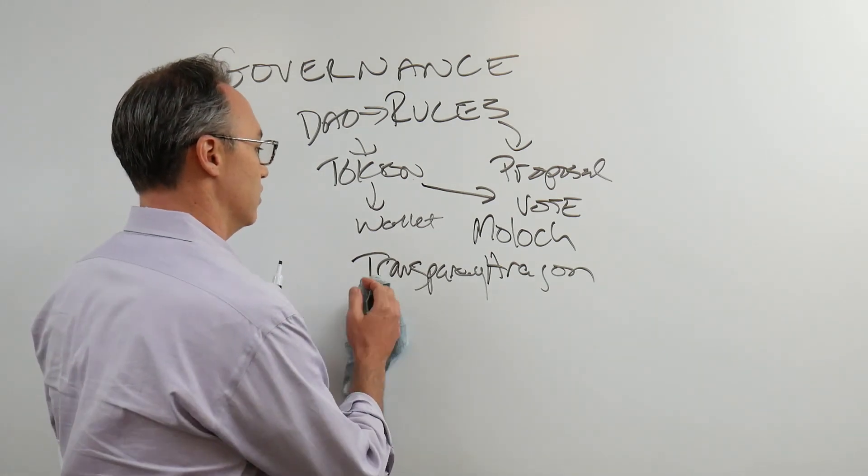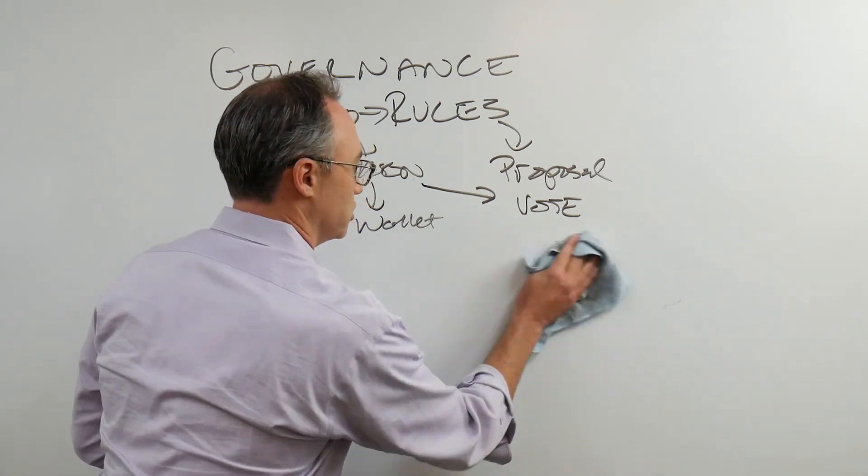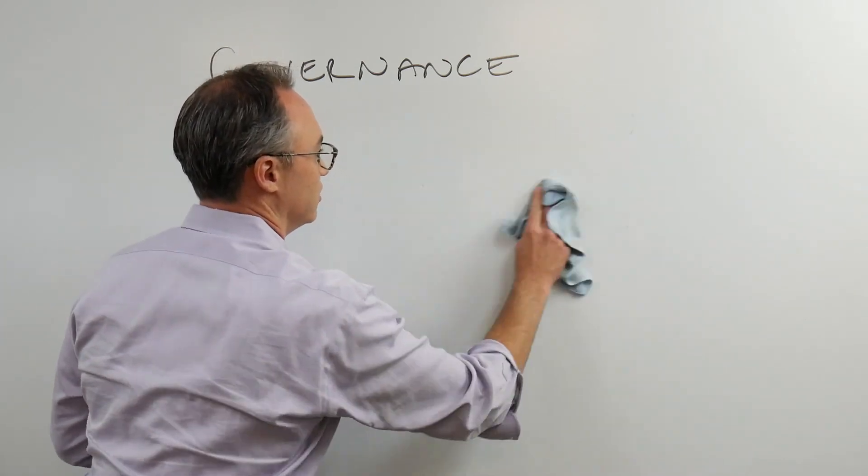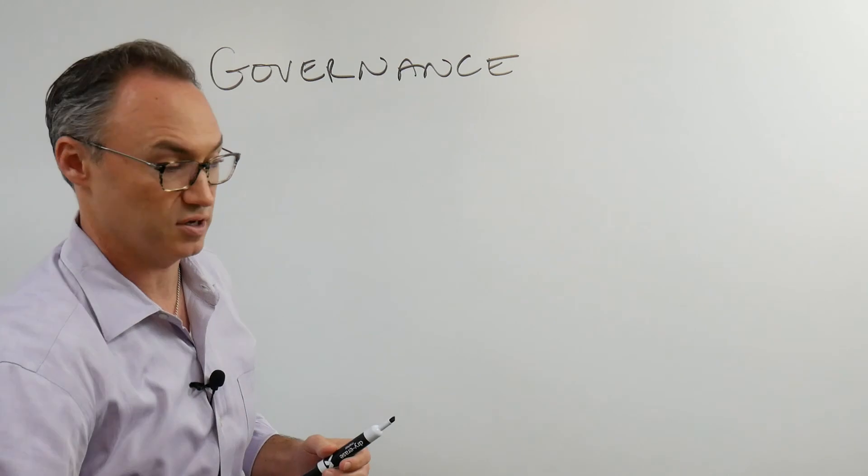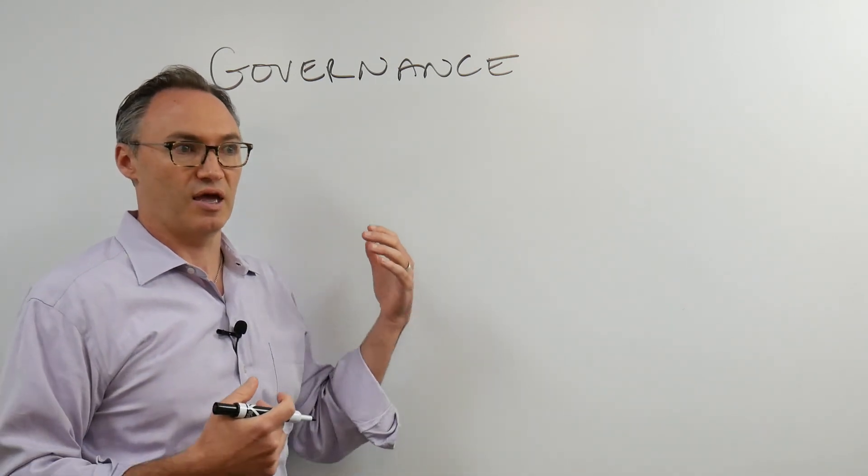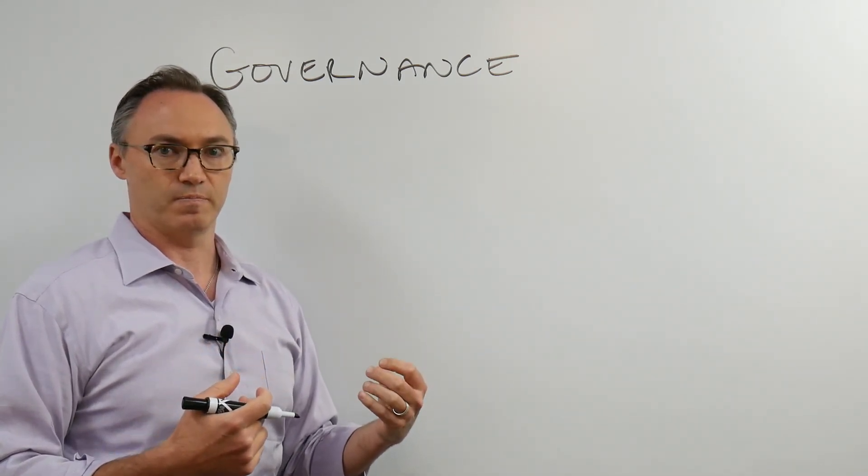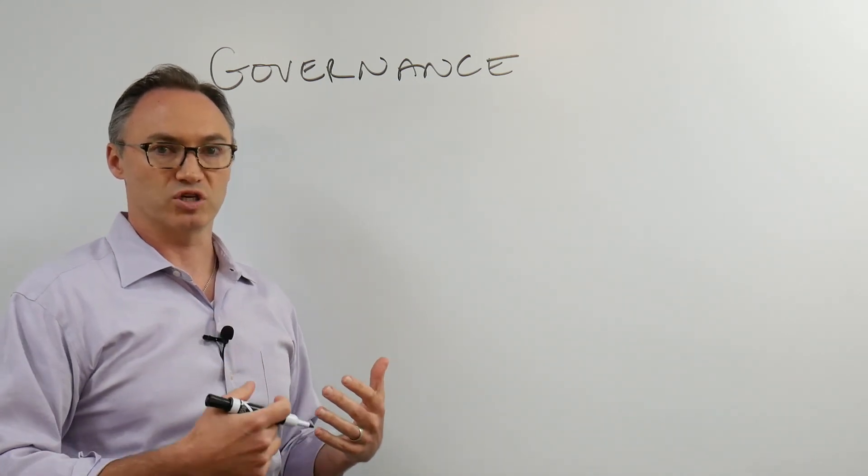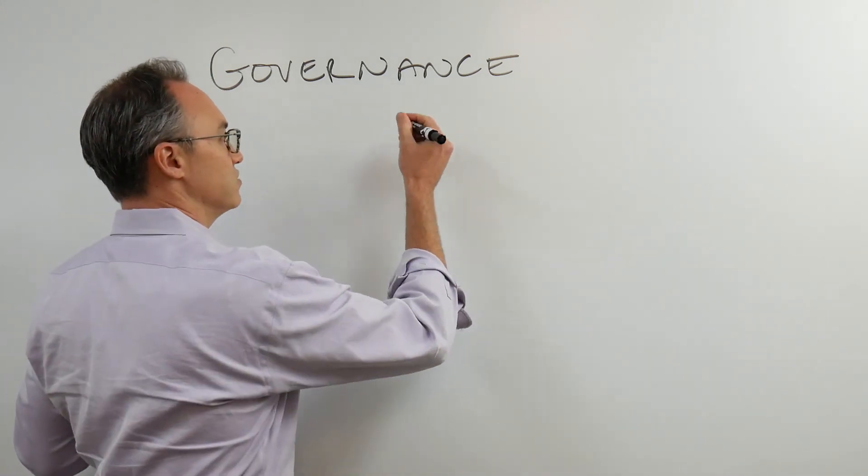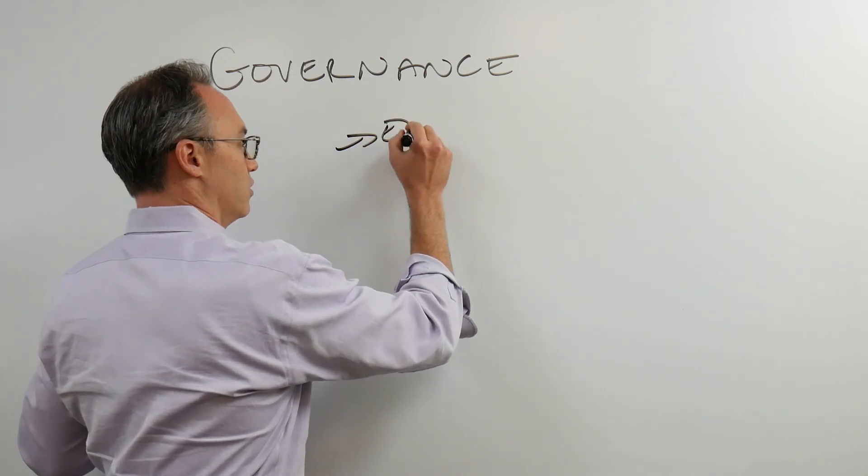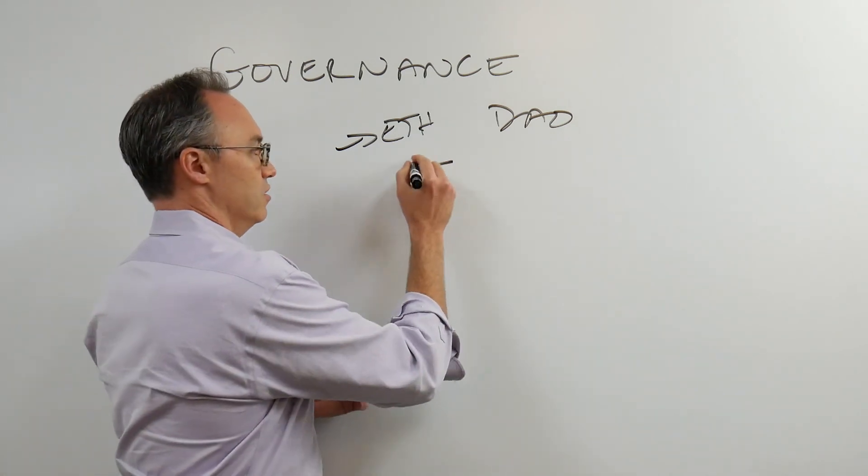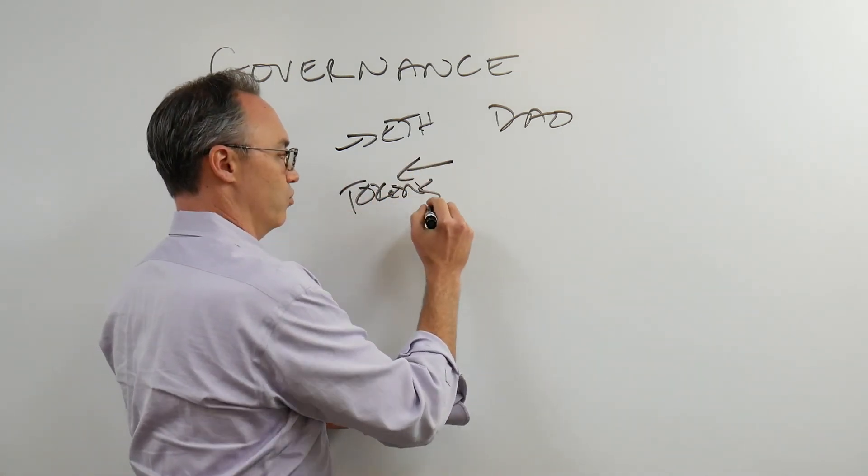Where we're seeing DAOs especially at the beginning is in non-profits. There are a lot of charitable organizations. There are a lot of non-profits in the DeFi world that are handing out money and help to some DeFi companies that need a little bit of cryptocurrency help. What happens is I might contribute ETH to the DAO, or DAI, or whatever it might be, and I get a certain number of tokens and we get to vote.